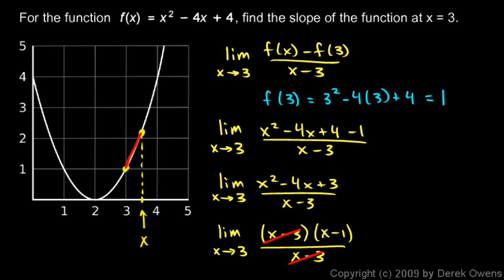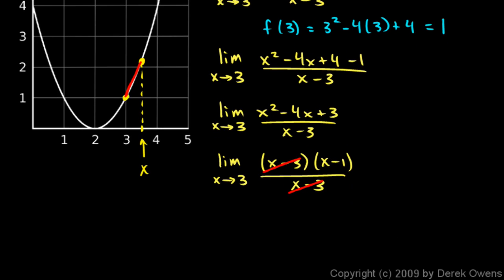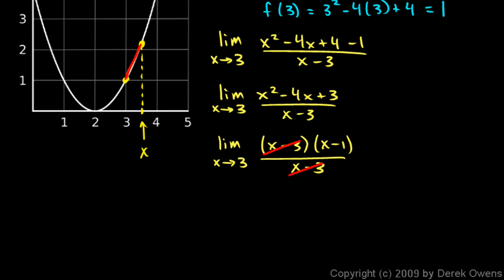And, very nicely, those cancel. So we're just left with the limit as x approaches 3 of x minus 1.